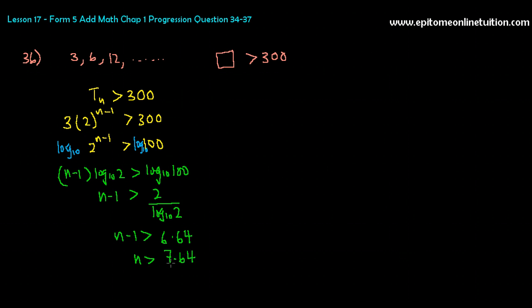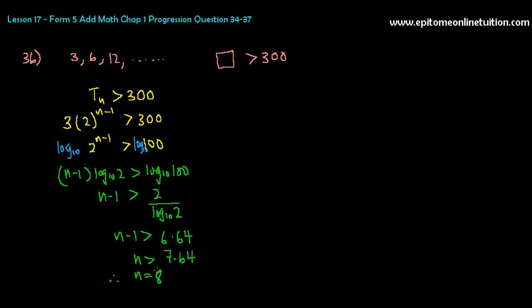So n is bigger than 7.64. When you get a decimal, it's perfectly fine, because they say n has to be bigger than 7.64. Therefore n would be the nearest integer that is bigger than 7.64, which is 8. Please don't write 9 or 10 — it doesn't make sense. The nearest integer to n that is bigger than 7.64 is 8.